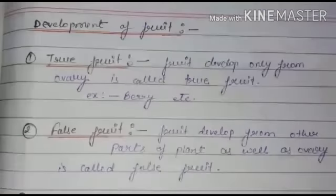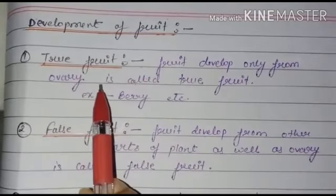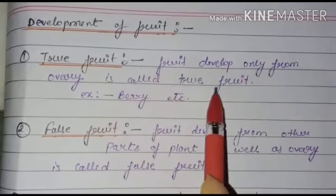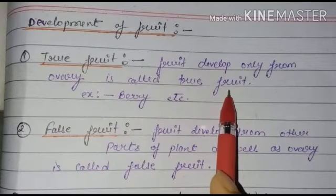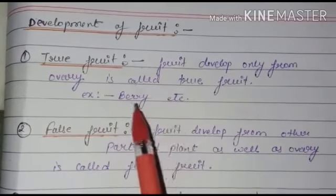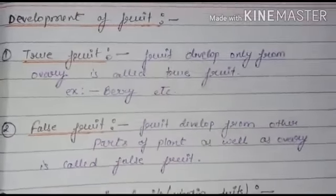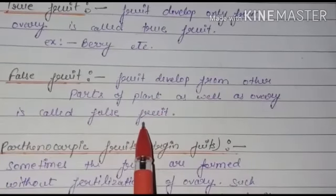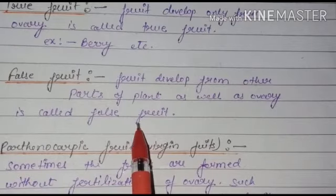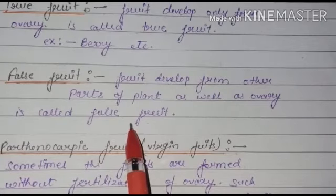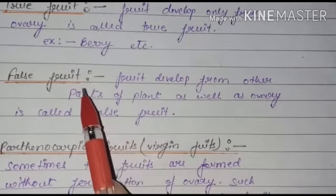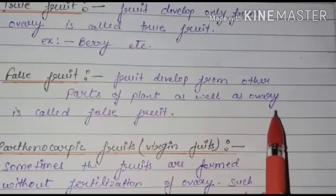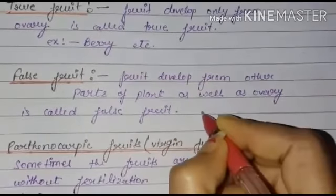Next is the development of fruit. There are three types of fruit. The first is true fruit — fruit developed only from the ovary is called a true fruit. Example: berry. The second is false fruit — fruit developed from other parts of the plant as well as the ovary is called a false fruit. Parts like calyx and corolla are also involved. Example: strawberry.